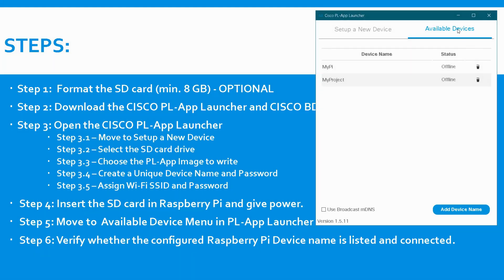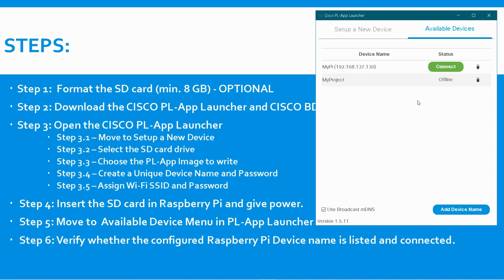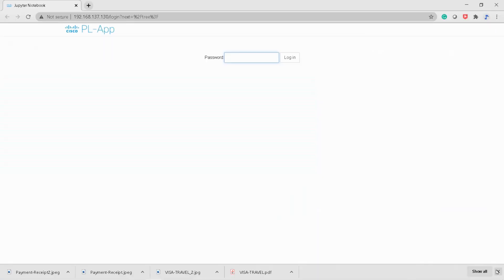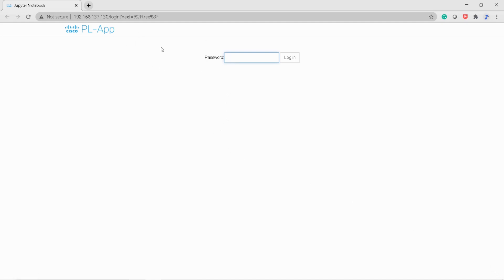In the Available Device menu, this is my device which I have configured. Now the Pi is booted up - the Raspberry Pi has inbuilt Wi-Fi. Wait for a minute for the available device status to change. If it is not connecting, just click the 'Use Broadcast MDNS' option. Once it broadcasts, it will catch your Raspberry Pi and the status will change with the Raspberry Pi IP address - 192.168.137.130. One important thing: ensure that your laptop and your Raspberry Pi are on the same Wi-Fi network, otherwise your laptop will not connect. Click Connect - it will open in the browser. Here you have to type the password which we created during the Set Up New Device step. I am typing 'password' and clicking Login.